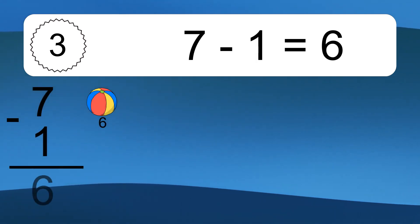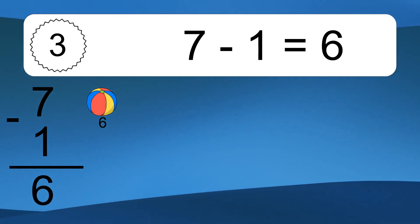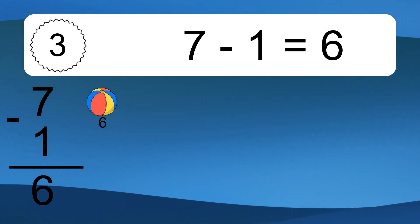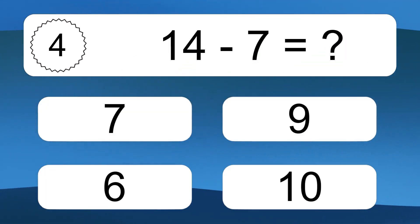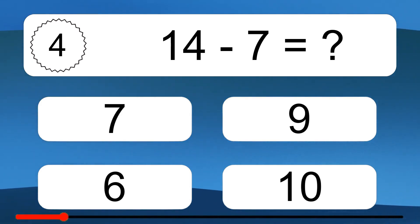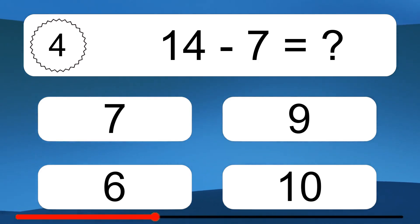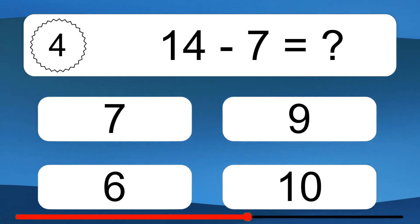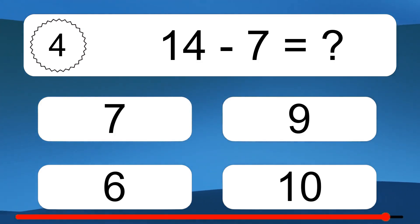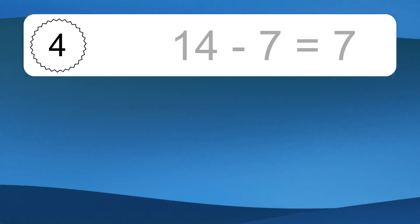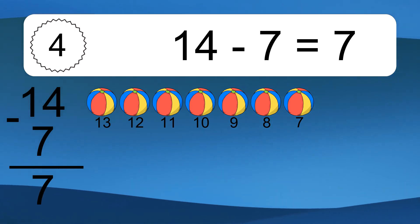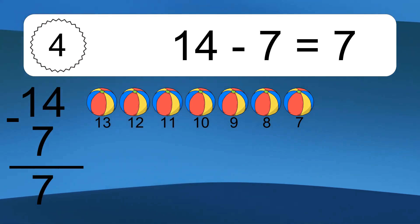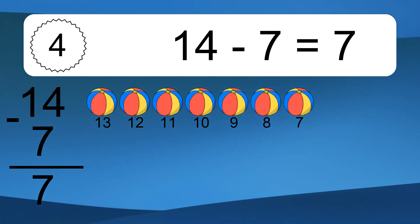7 minus 1 equals what? 7 minus 1 equals 6. Let's count it: 6. 14 minus 7 equals what? 14 minus 7 equals 7. Let's count it: 13, 12, 11, 10, 9, 8, 7.